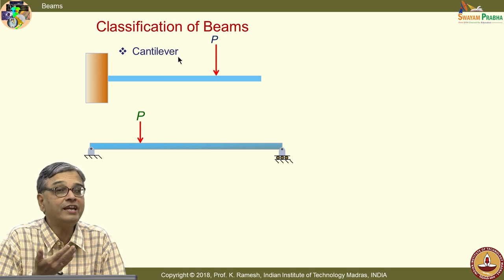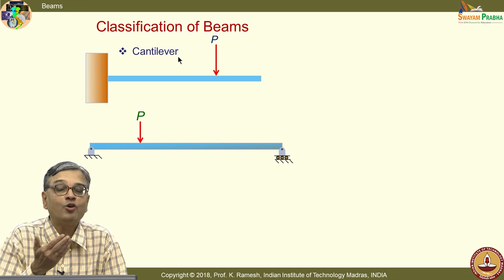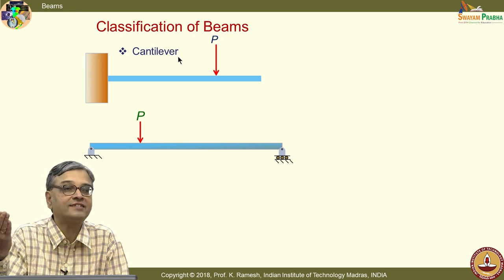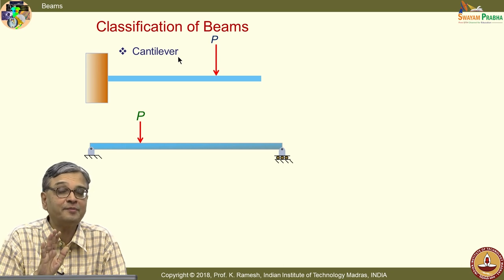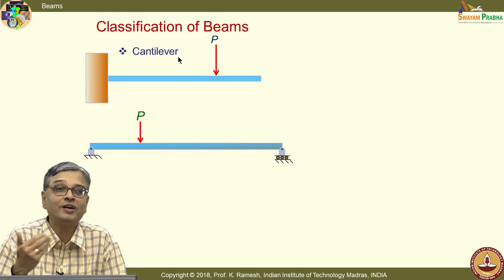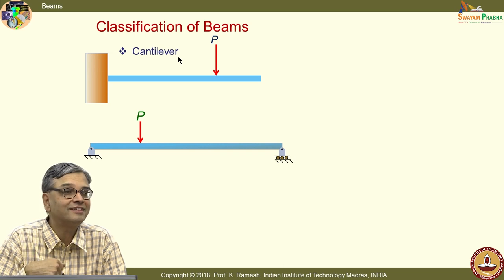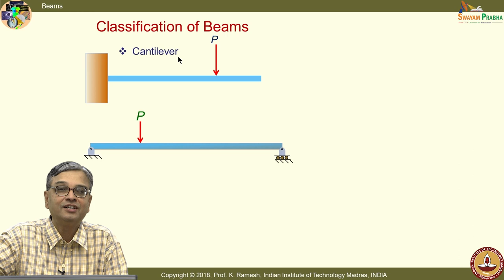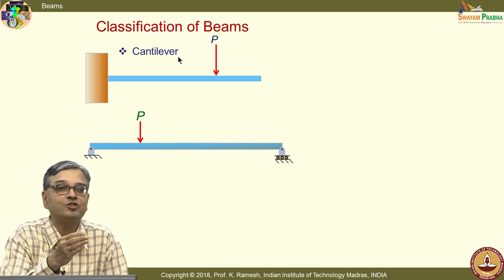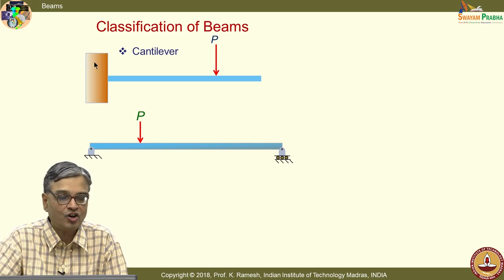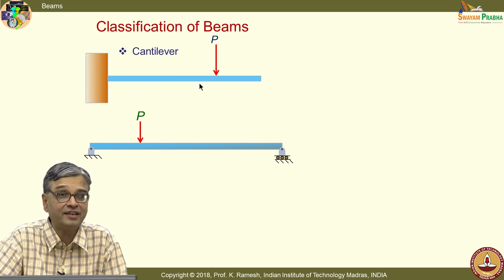There is something very interesting about the branch of a tree — how does the cross-section vary along its length? God has understood engineering mechanics much better than you and I. The branch is tapered so that where you need a higher cross-section to withstand the bending moment, you have a higher cross-section. It is not a constant cross-section. Nature is very, very intelligent.